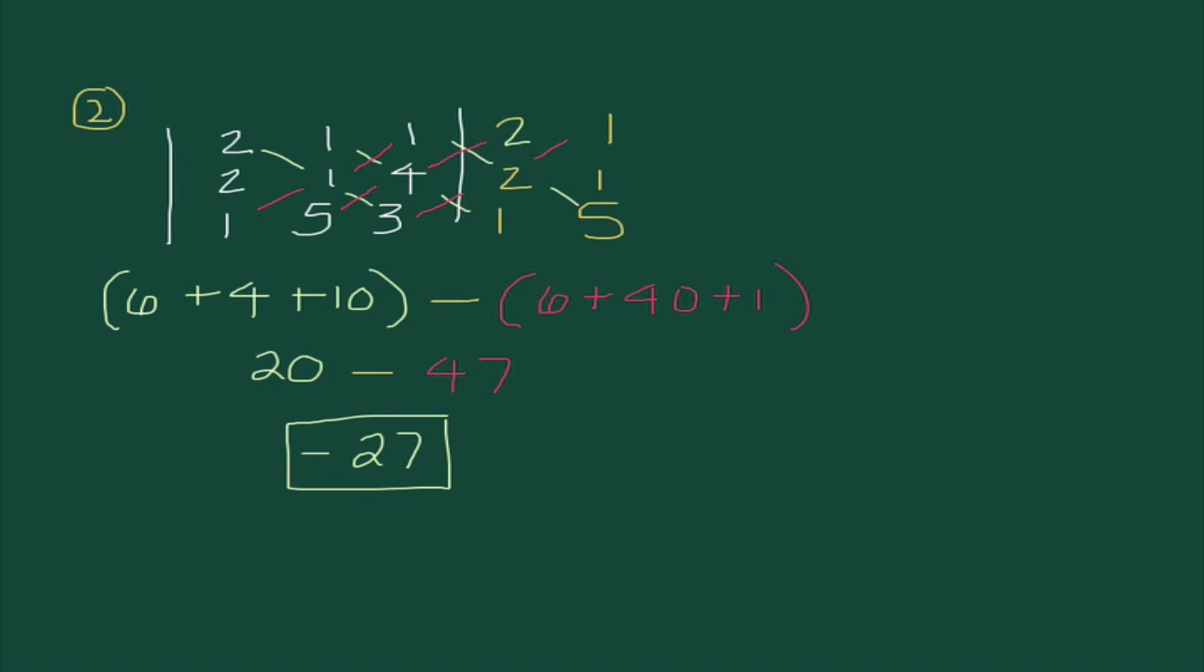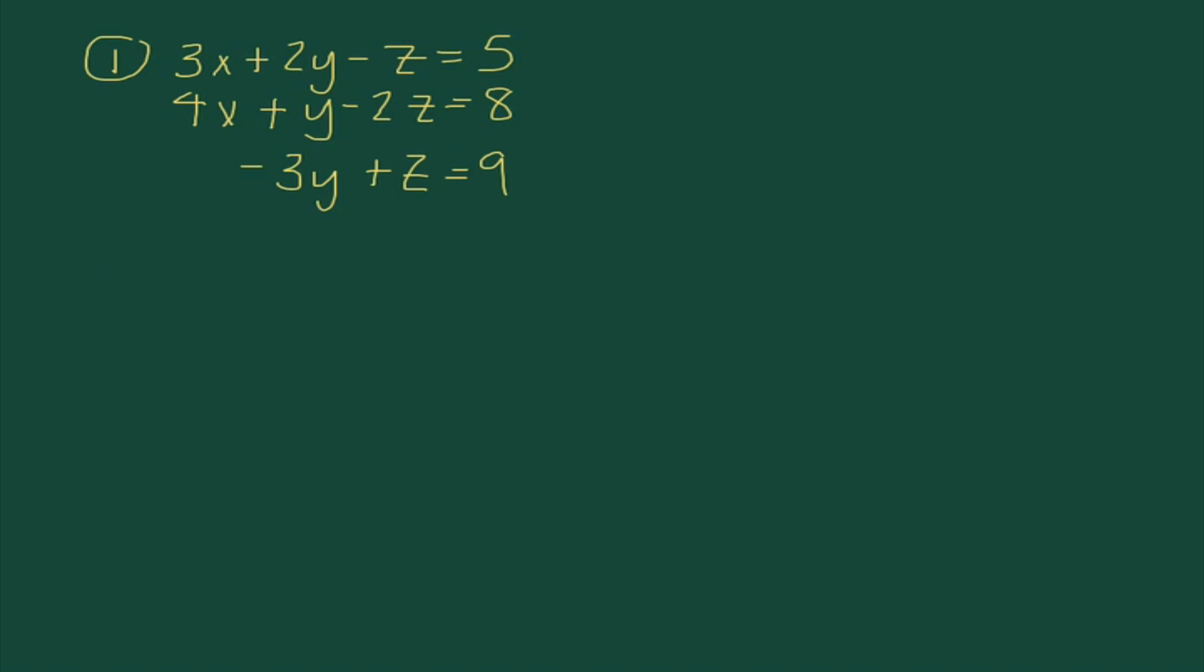Okay, so, once again, just to kind of walk us through what we did here, I took these first two columns and rewrote them again. Then, we multiplied all the diagonals that had three numbers. When I ran out of those, I did subtract, baby, and multiplied backwards all the diagonals that have three numbers. Then, I found the sum of this expression. Okay, so, let's jump back to number one.